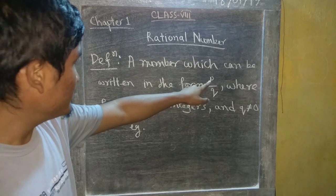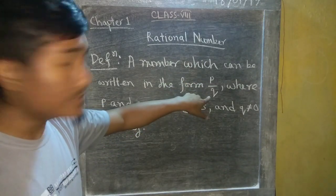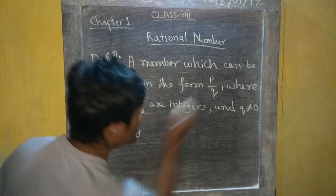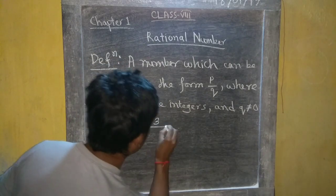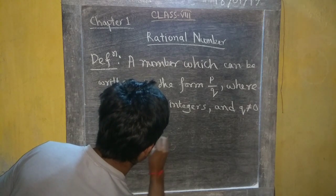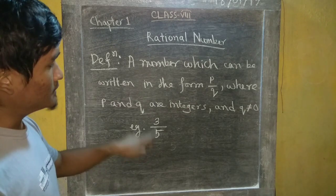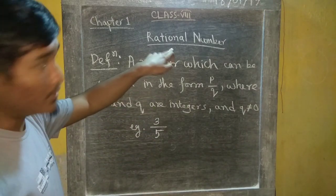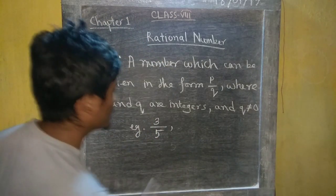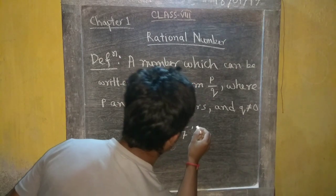A number which can be written in the form P by Q, where P and Q are integers. For example, suppose P is 3, which is an integer, and Q is 5, which is an integer. So 3 by 5 is a rational number. Similarly, 5 by 7, etc.